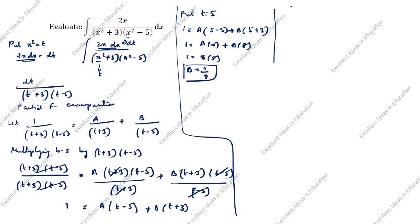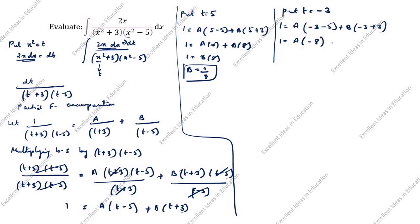Next, put t = -3. You see here (t + 3) is present, so we take t = -3: 1 = A(-3 - 5) + B(-3 + 3), so 1 = A(-8) + B(0), giving 1 = -8a, therefore a = -1/8.